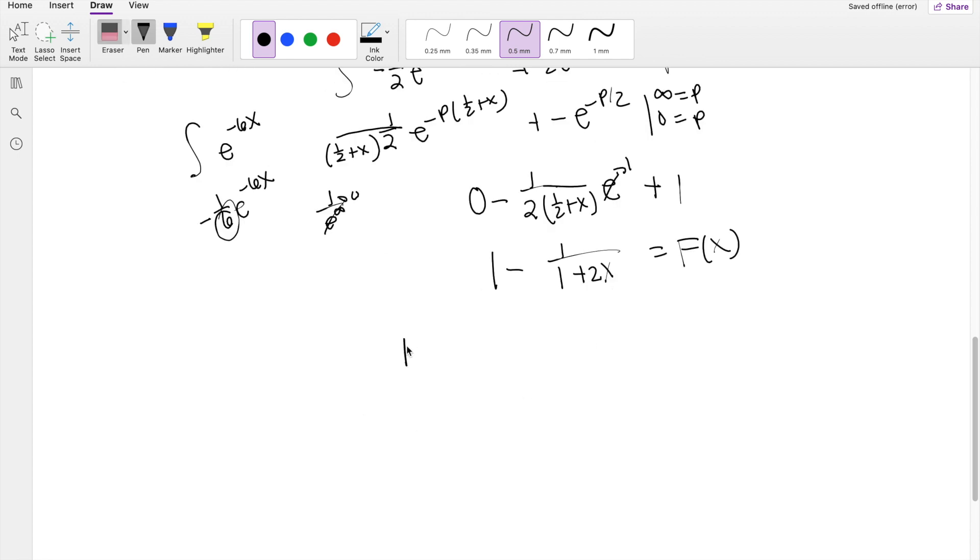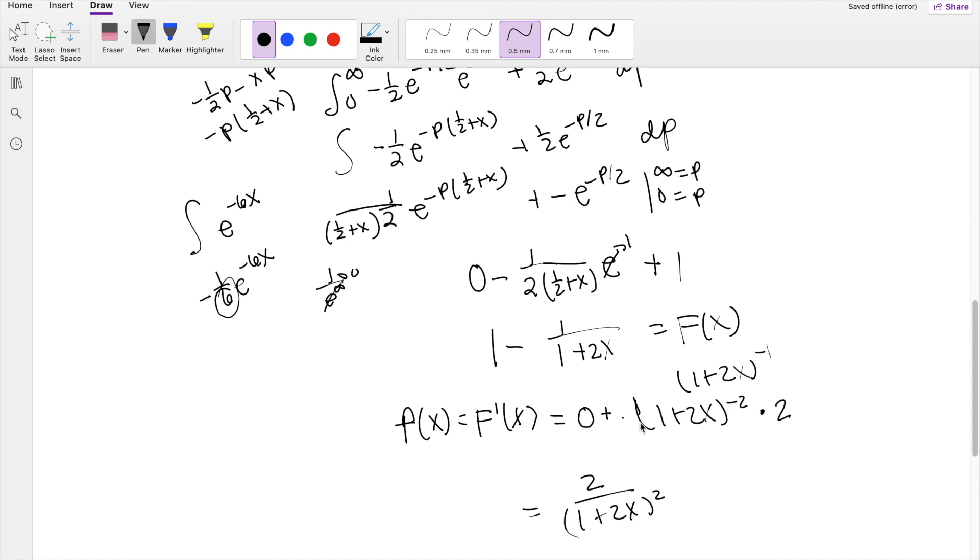And this is the CDF of X. We want to find the F of X, the probability distribution function, which we know is just the derivative of the CDF. So then this is equal to, when you take the derivative of 1 it becomes 0. You can think of this as 1 plus 2x to the negative 1, so the negative 1 you bring it out times 1 plus 2x to the negative 2 times the chain rule, times 2. So this is equal to 2 over 1 plus 2x squared.